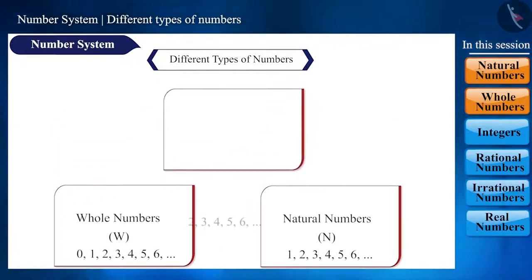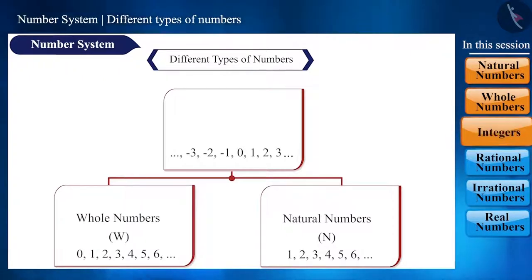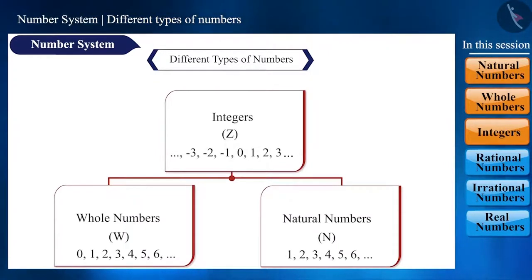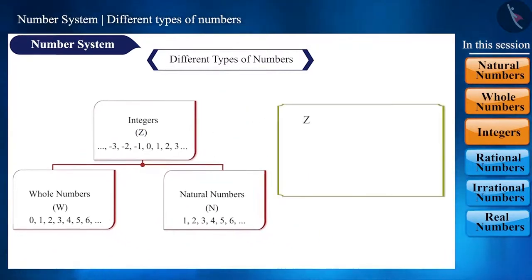If we take negative forms of natural numbers, i.e., minus 1, minus 2, minus 3, etc., the group formed is called integers and is expressed with the symbol z. Did it not occur to you as to why do we express integers with symbol z and not with i? Z is derived from the German word zalen which means to count and zal which means number.